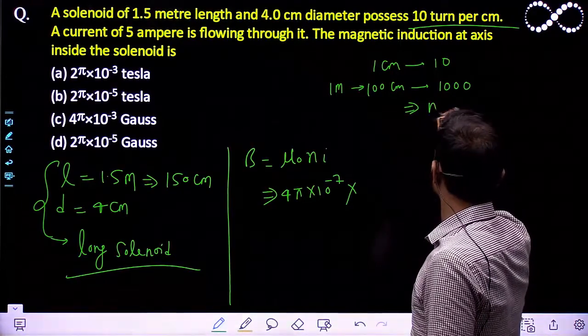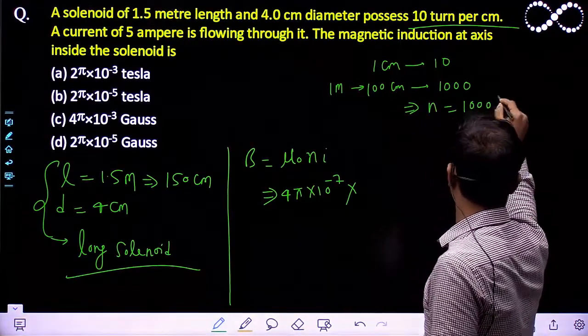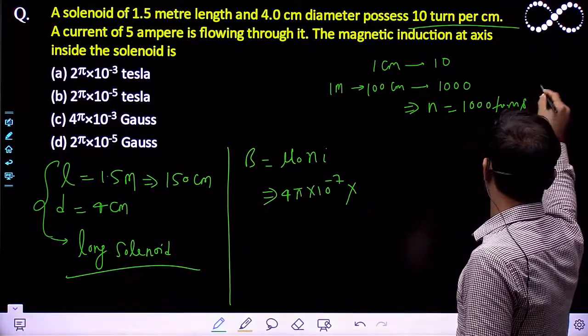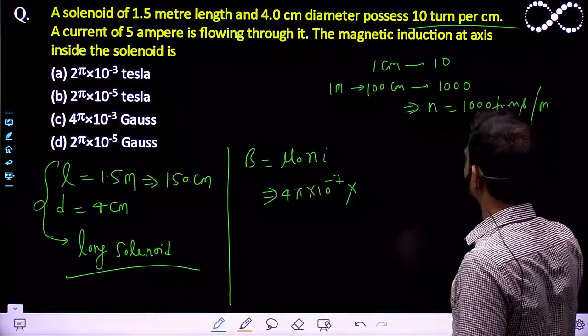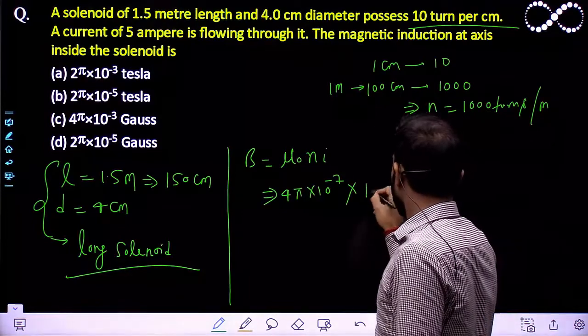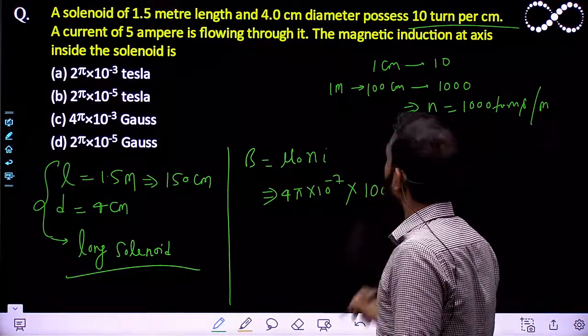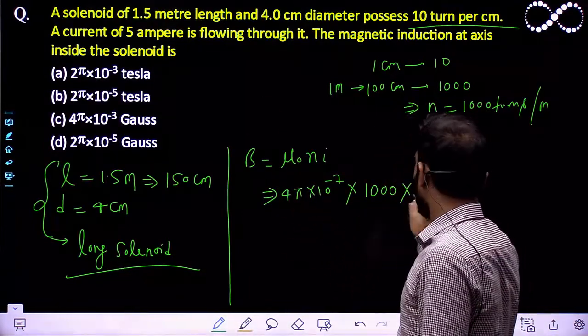N will become 1000 turns per meter and that is the value of N in terms of SI system. That will be 1000 into the value of current is given 5, so that will be 5 here.